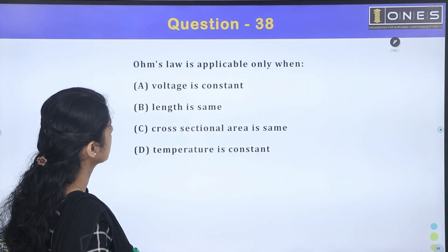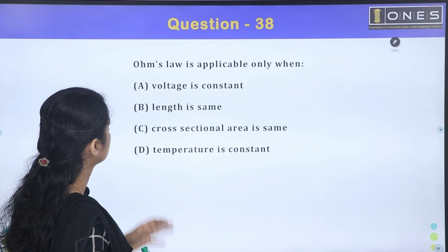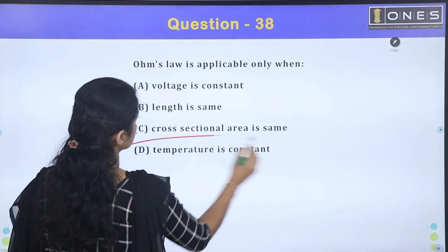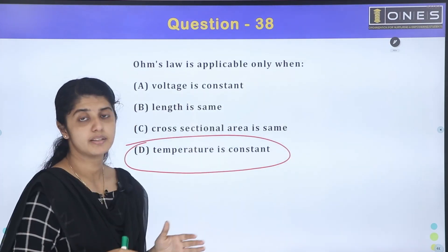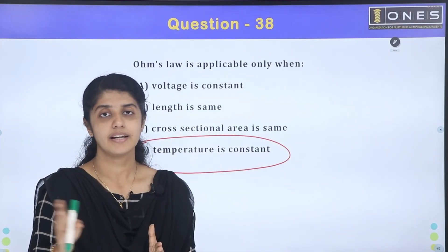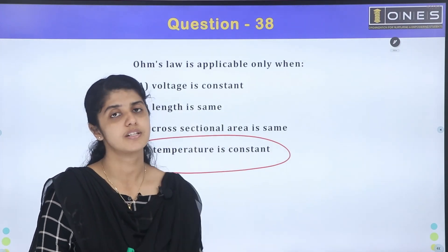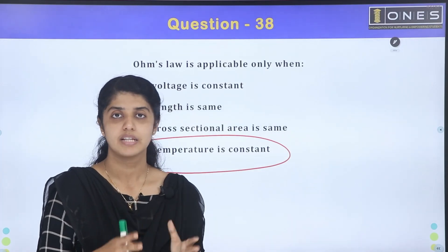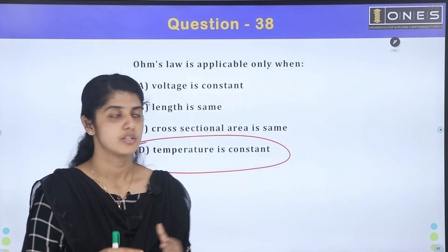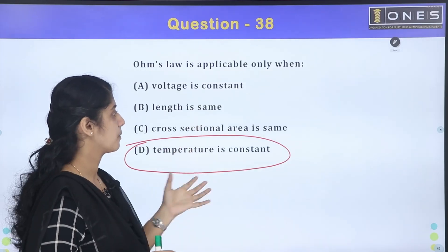Ohm's Law is applicable only when? Ohm's Law is applicable only at constant temperature. At constant temperature, voltage is proportional to current — meaning V is proportional to I.